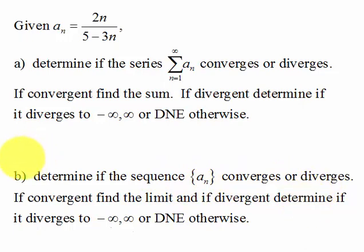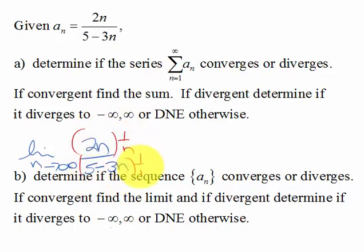If we look at the limit as n goes to infinity of 2n over 5 minus 3n, we can see what happens here. We'll go ahead and officially write it out. If we multiply both of these by 1 over n, we have the limit as n goes to infinity of 2 over 5 over n minus 3.